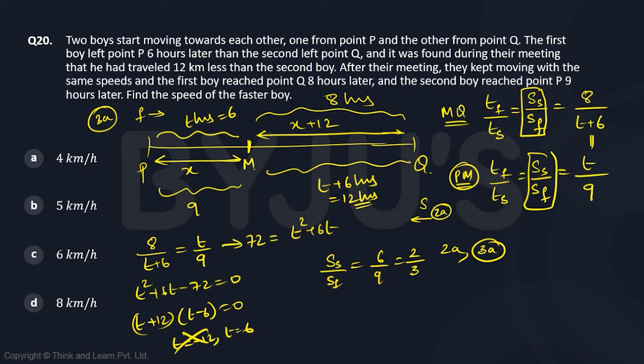Okay, now we have to find the value of a to get your answer. How do we do that? Now look at it. X distance is covered. So what is x? Your x is speed into time, right? What is your speed for the first boy? First boy's speed is 3a into time taken by the first boy is 6. So your x is 18a.